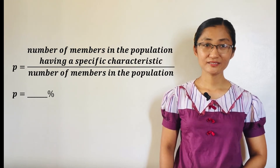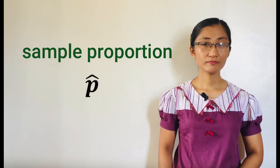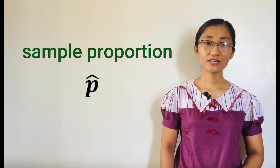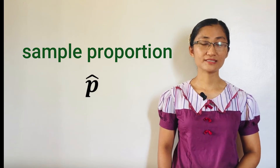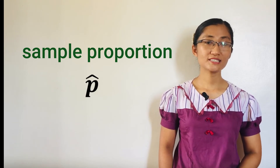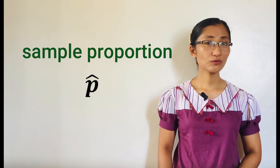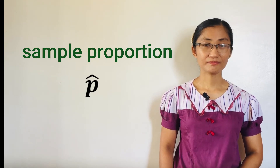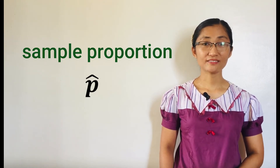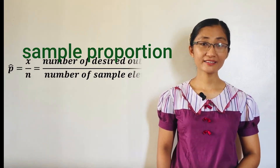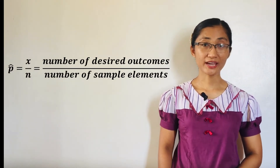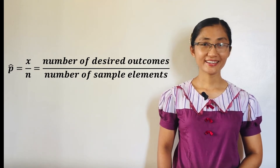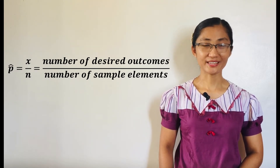On the other hand, sample proportion, P-hat, is a ratio of the number of elements in a sample obtaining a specific characteristic over the number of elements in a sample, or the sample size n. In symbols, we write it as: p-hat equals x over n, where x is the number of desired outcomes and n is the number of sample elements.